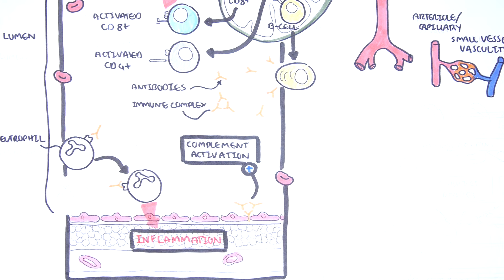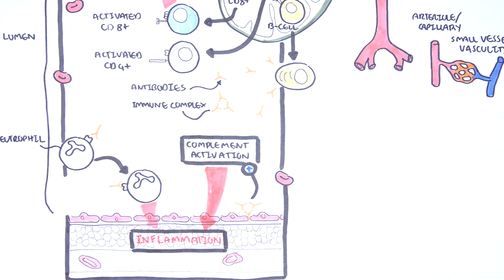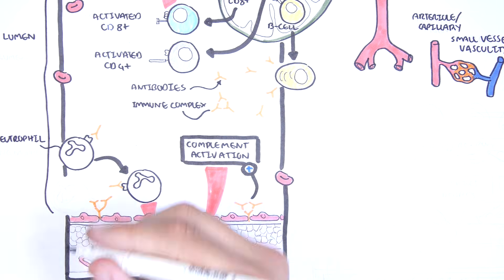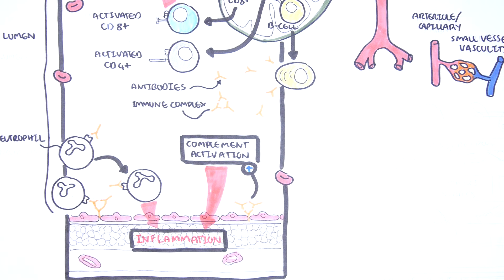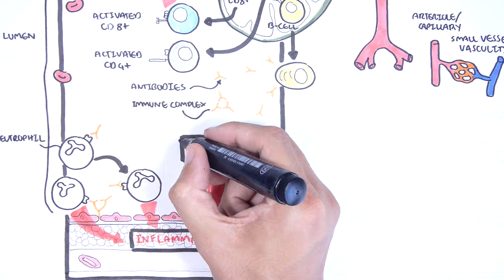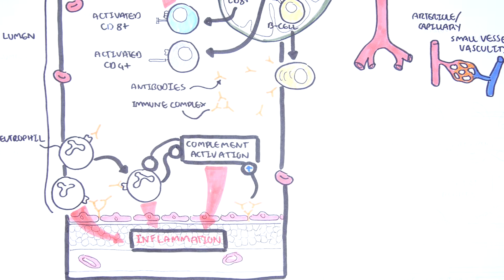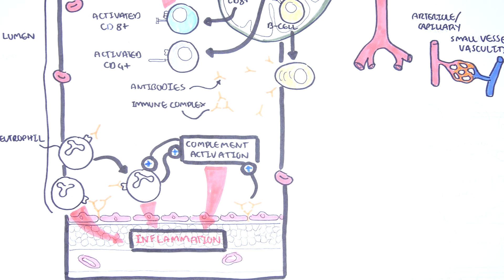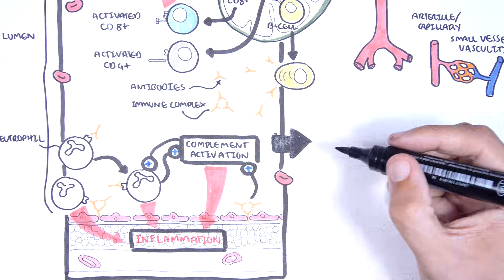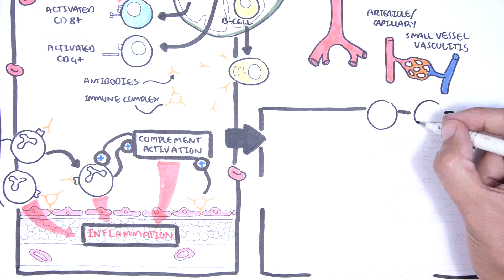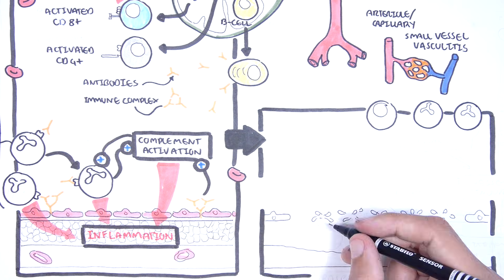Firstly, in vasculitis it can cause endothelial cell lysis. Secondly, the activation of complement can trigger phagocytes to eat up cells of the vessel through opsonization. And thirdly, complement can act as proinflammatory cytokines promoting the inflammatory response. Immune complex mediated vasculitis is seen in vasculitides including Henoch-Schonlein purpura, polyarteritis nodosa, and secondary vasculitis such as from systemic lupus erythematosus.